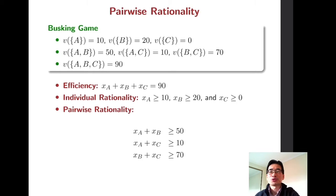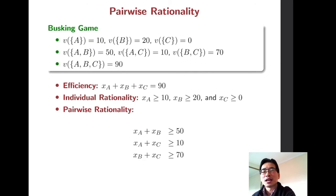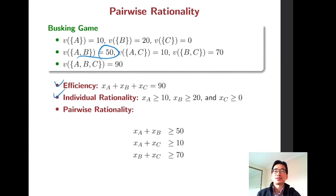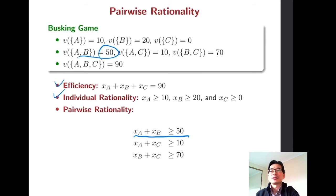To discuss this question, let me introduce pairwise rationality. In addition to efficiency and individual rationality, if A and B form a coalition then they can generate a surplus of 50, so it would be rational to allocate at least 50 jointly to A and B. So the sum of their payoffs should be greater than or equal to 50.